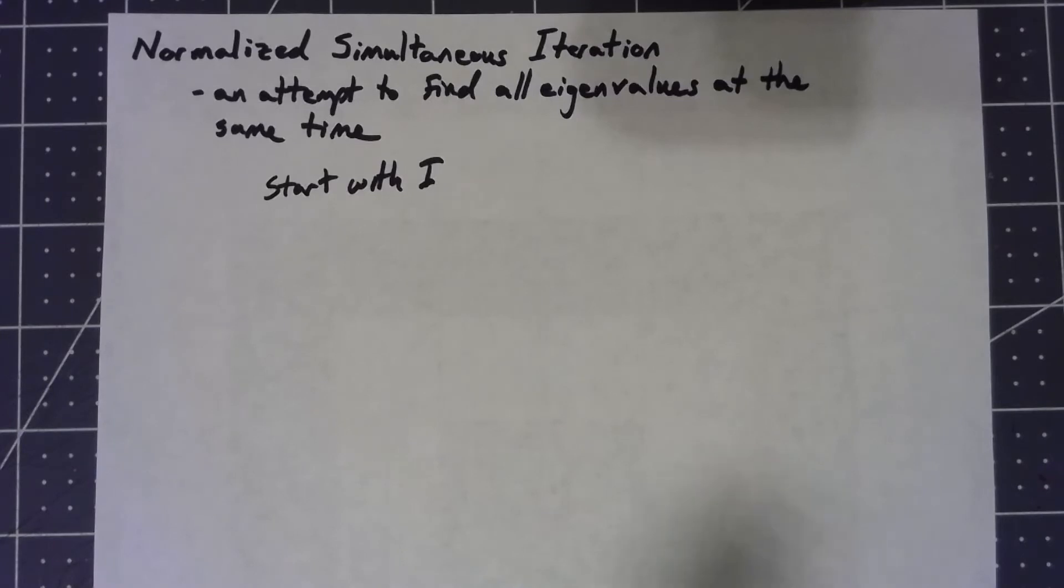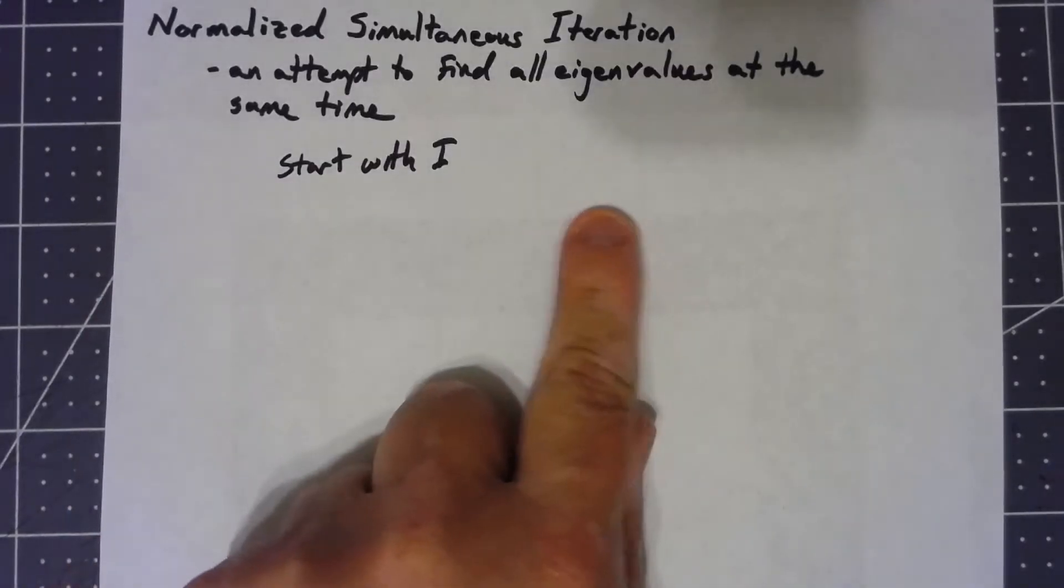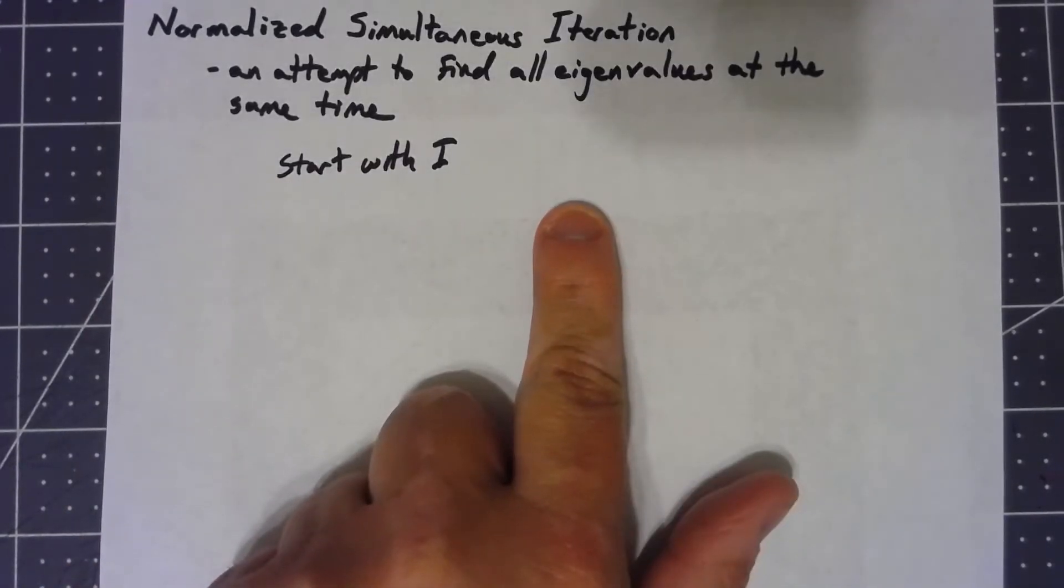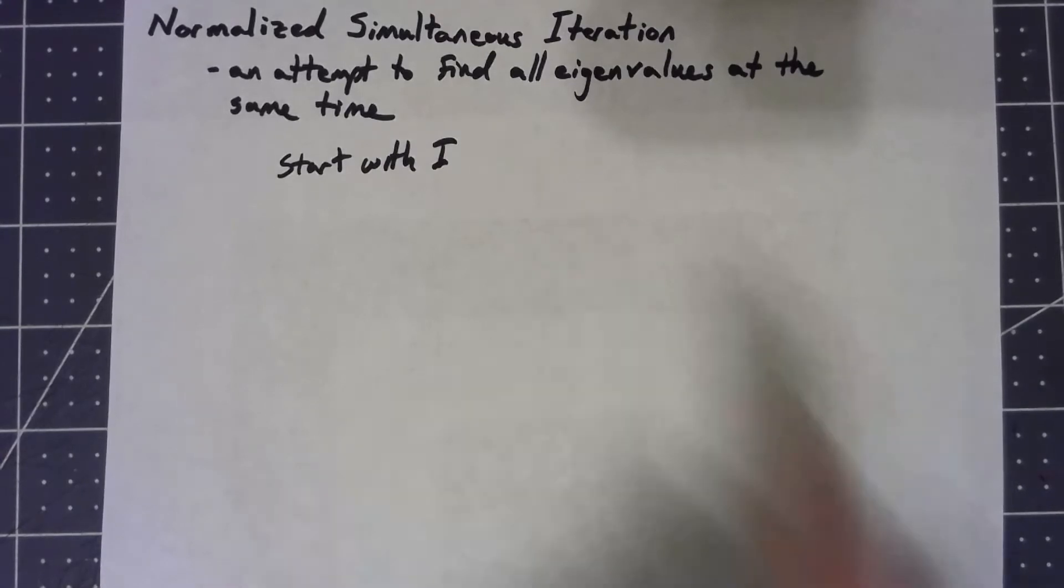Because basically what we're doing, the different columns of I are just different starting vectors, and we know that the power iteration applied to a single vector converges to the eigenvector of the dominant eigenvalue. So we have to find a way to prevent that from happening.